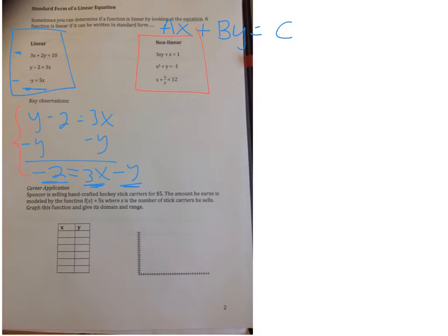Over on the right-hand side, this first equation has an xy. We can't have x being multiplied by y—it's not going to allow you to put it in standard form. Second one, what do you notice? We have an exponent. No exponents in linear.